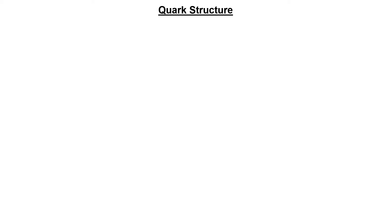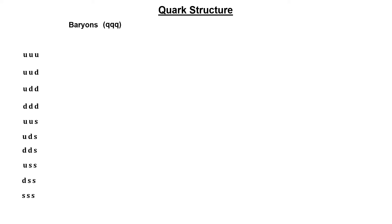Hadrons are of two types: mesons and baryons. Baryons have half-integer spin and baryon number +1. This is only possible if all baryons consist of 3 quarks, because the baryon number of all quarks is 1/3, so the total baryon number of 3 quarks is +1. All quarks have spin 1/2, so the total spin of 3 quarks is also half-integer. There can be a total of 10 possible configurations of 3 quarks from up, down, and strange quarks. The first configuration has 3 up quarks, with total charge 2 and strangeness 0.